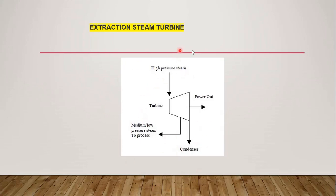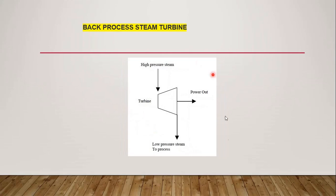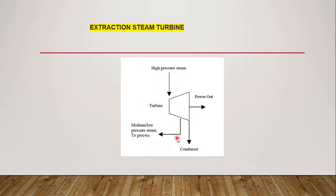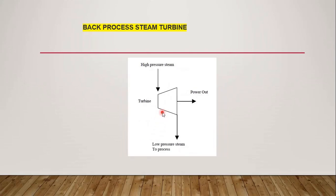These are somewhat critical turbines and the control logic is also a bit more complicated compared to the non-extraction turbine. The other category is the back pressure steam turbine. The major difference is that high pressure steam is coming in and you have only one outlet. In the extraction steam turbine, steam comes in with one outlet going to the condenser and another going to the process, but in the back pressure steam turbine you can see only low pressure steam going to the process.